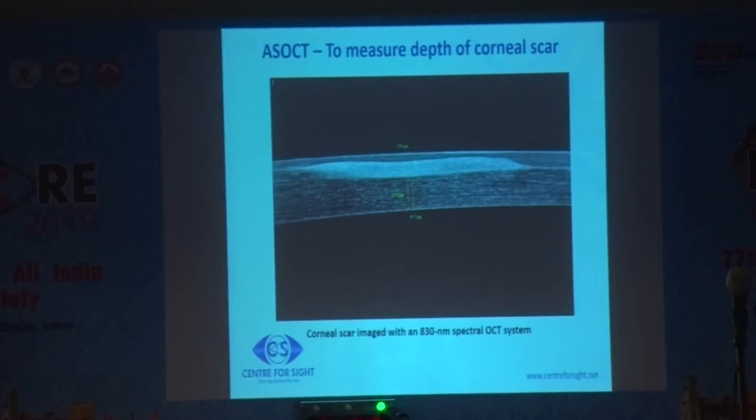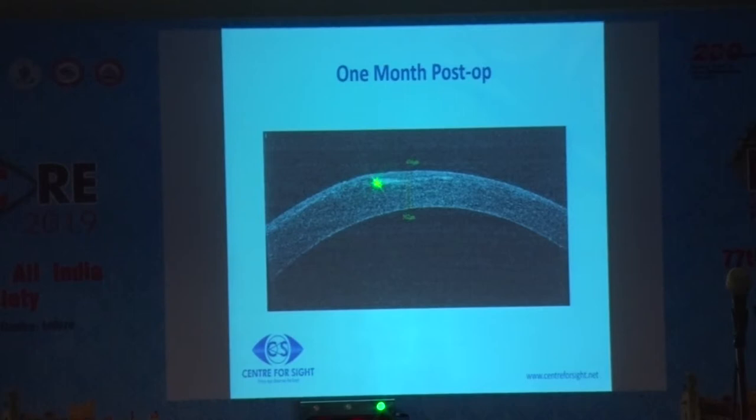We had sufficient residual stromal thickness of around 470 microns, so we proceeded with amputation of the flap, removing the scar area. This is the one-month post-op picture — there is minimal scarring and a lot of improvement in the patient's visual symptoms. We can still do PRK, but the patient is satisfied at this point and doesn't want any further surgery.